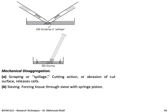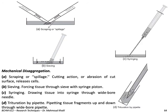For mechanical disaggregation, there are four types: scraping the tissue against the bottom of the blade; sieving — forcing tissue through a sieve with a syringe piston; syringing — drawing tissue into a syringe through a wide-bore needle; or trituration by pipette — pipetting tissue fragments up and down through wide-bore pipettes. All four types can be used for disaggregation of tissues.